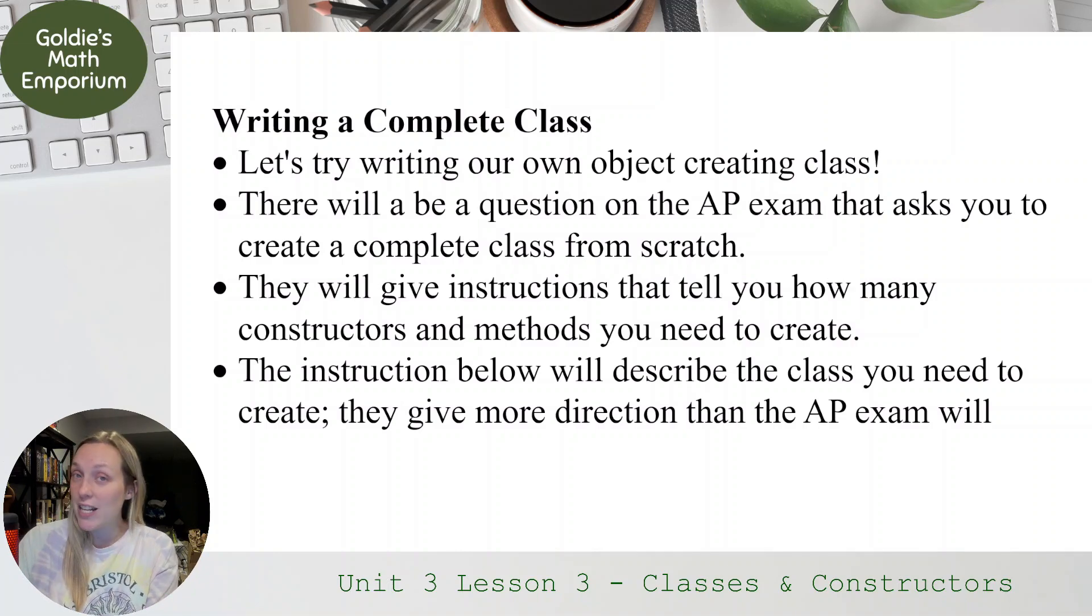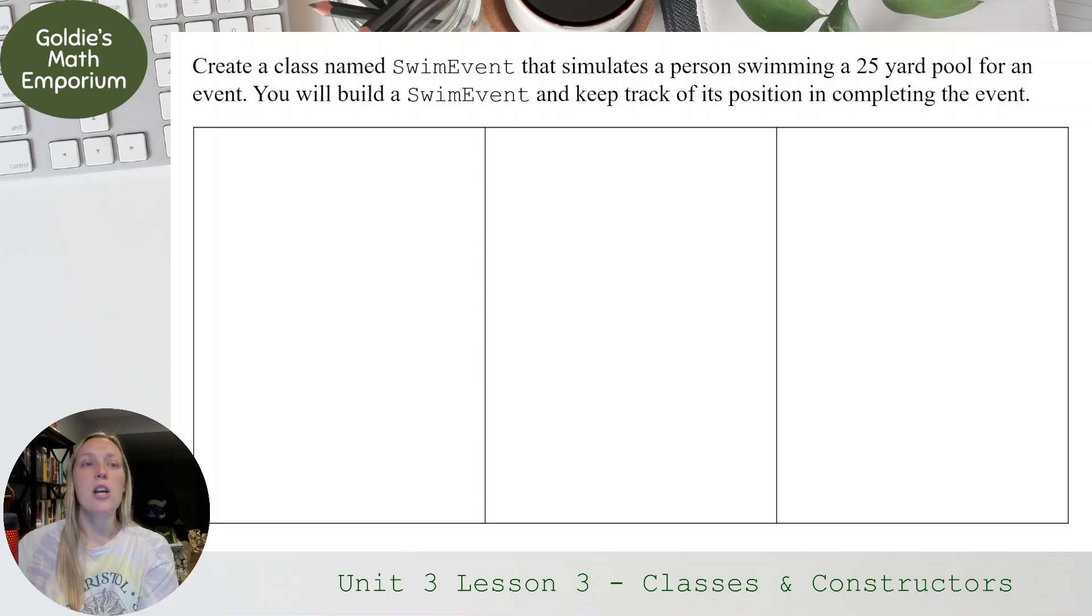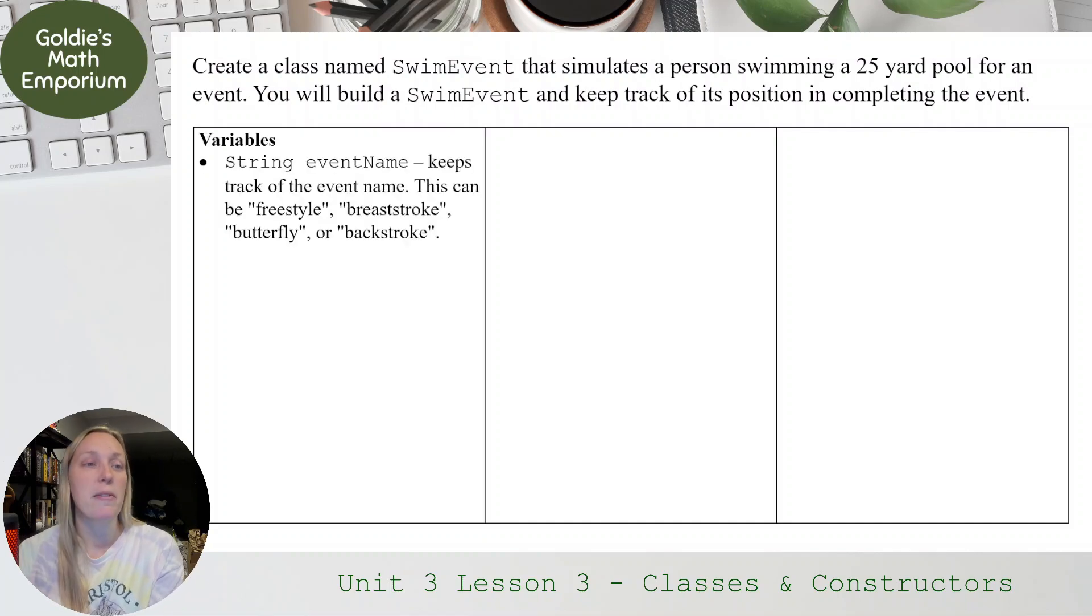So we're just getting started writing our own classes. So that's why I have a bit more detail than the AP exam. Eventually, we're going to transition all the way into that narrative. So these instructions, I'm going to lay out the instructions before we get started with the code. You're going to create a class named SwimEvent that's going to simulate a person swimming a 25-yard pool for an event. You're going to build a swim event and keep track of the position in completing the event.